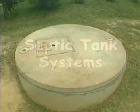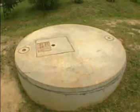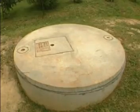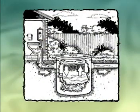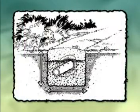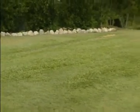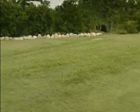Septic tank systems consist of a tank that breaks down the solid waste through a natural bacterial process, producing primary effluent. This effluent is discharged directly from the septic tank into the soil by pipes and trenches in the land application area.